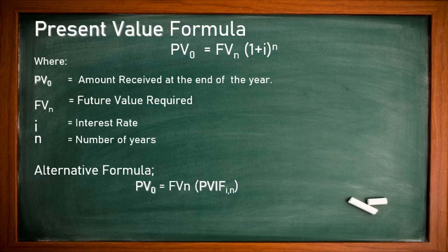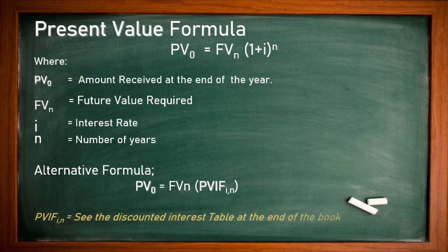With the alternative formula, PV0 equals FVn multiplied by PVIF(i, n), where i is the interest rate and n is the number of years. This table is given at the end of the book — it is also known as the present value table, normally in the appendix as the second table. The first table is the compound interest rate and the second is the discounted rate. Some books label it future value interest factor, some label it present value interest factor.